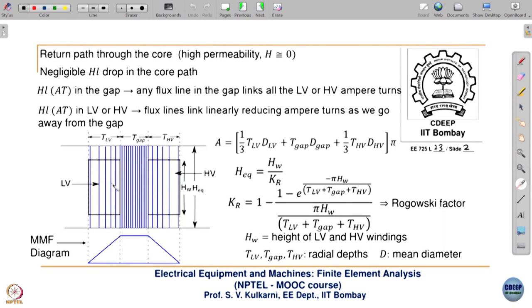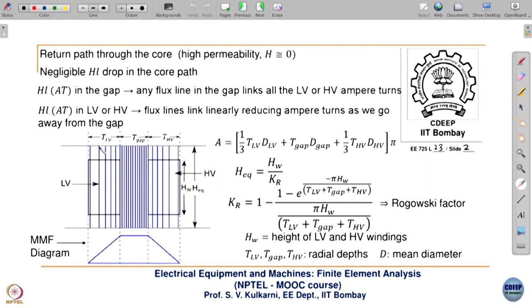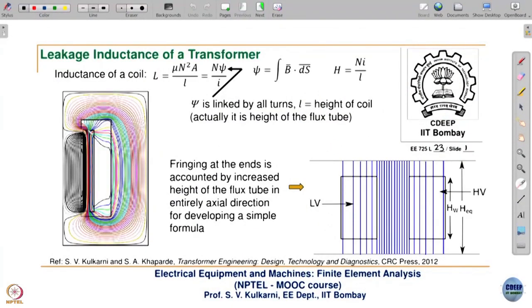In the gap between the LV and HV winding, the flux is uniformly spaced. As you go away from the gap into the windings, initially the flux is closely spaced and then becomes sparsely spaced. This is because as you go away from the gap, the ampere turns enclosed by any flux line progressively reduce. We are neglecting magnetizing ampere turns — effectively taking permeability of core as infinite. So B/μ tends to zero, meaning H tends to zero in the core part.